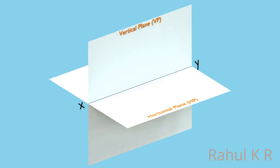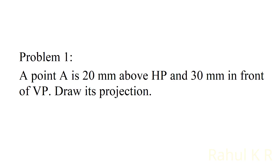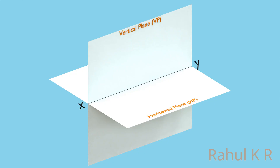Let's try to solve a problem. A point A is 20 millimeters above HP and 30 millimeters in front of VP. Draw its projection. For solving this problem, let's imagine the point A which is 20 millimeters above the horizontal plane HP. It is also 30 millimeters in front of the vertical plane VP. That means the point is in the first quadrant.